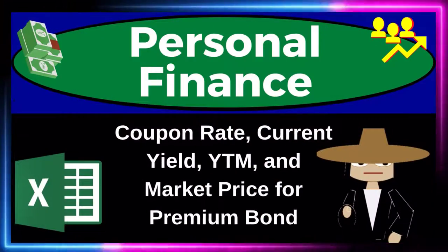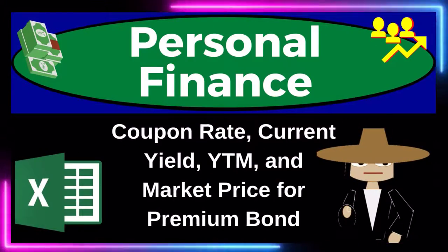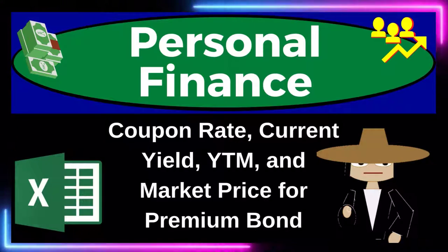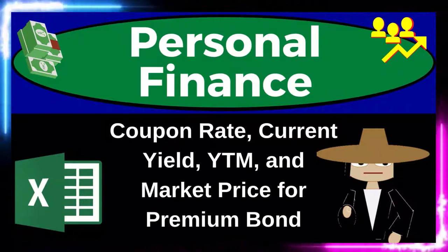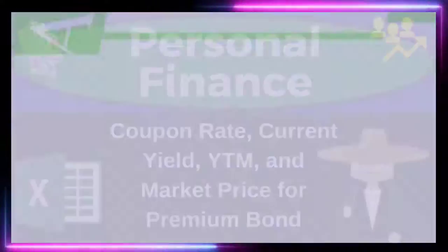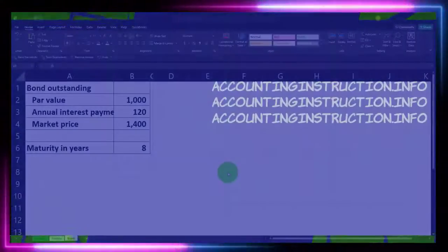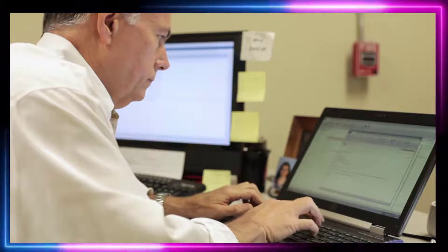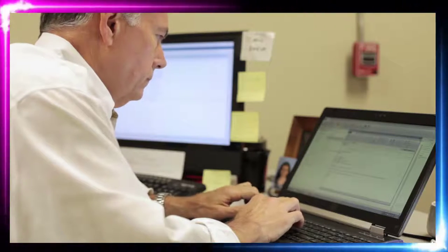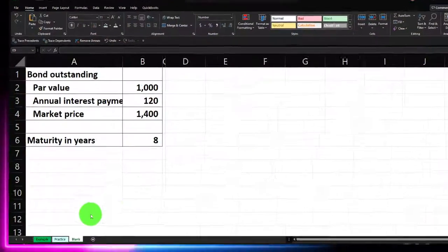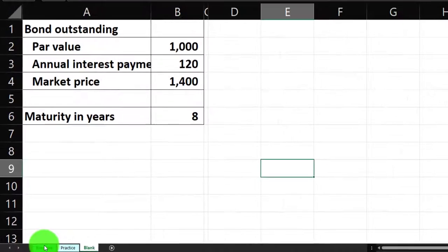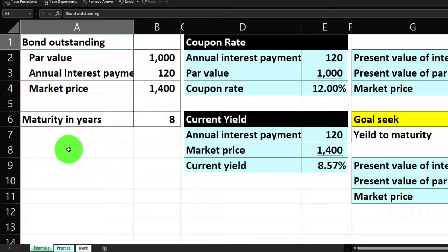Personal finance practice problem using Excel: coupon rate, current yield, yield to maturity, and market price for a premium bond. We're in our Excel worksheet with three tabs at the bottom — example, practice, and blank. The example tab has information on the left and calculations on the right.